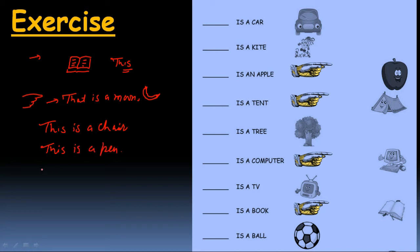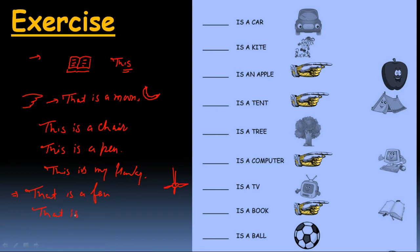हमारे हाथ में pen है तो हम क्या कह सकते हैं? 'This is a pen'। हमारे हाथ में hanky है तो क्या कह सकते हैं? 'This is my hanky'। और हमसे दूर fan है — छत पर लगा हुआ है — तो 'that is a fan'। और क्या है? 'That is a TV' — wall पर लगी हुई है।